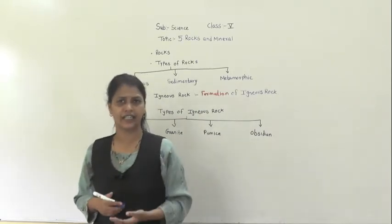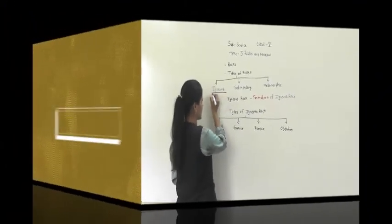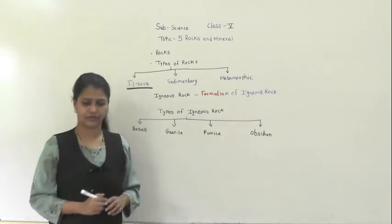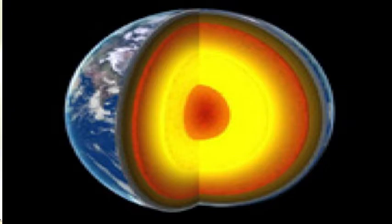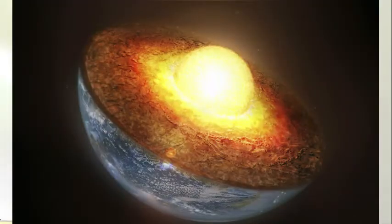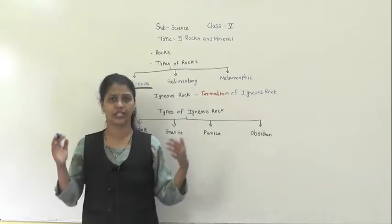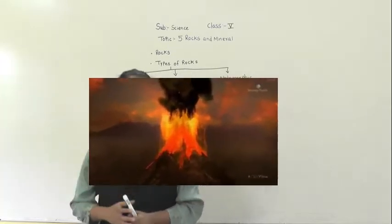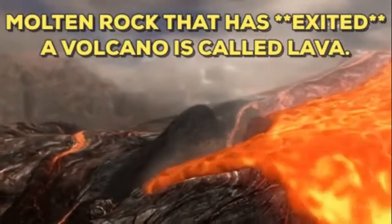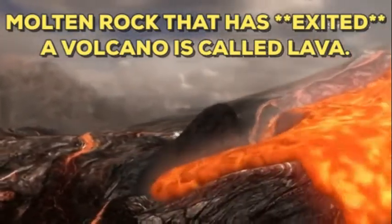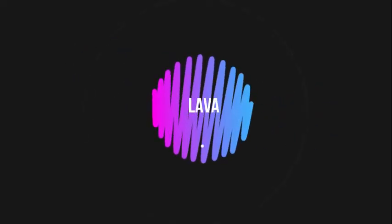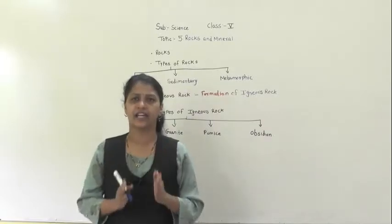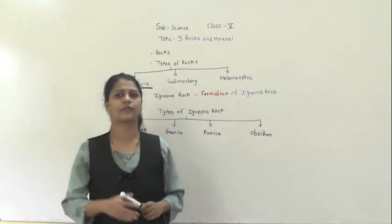We are going to learn about each rock one by one in detail. The first rock we are going to discuss is igneous rock. The center of our Earth is made up of hot molten rock called magma. When a volcano erupts, this magma flows down on the surface of the Earth, and that is called lava.